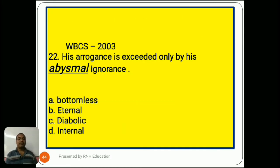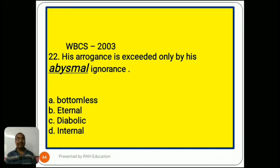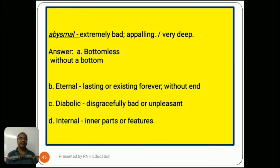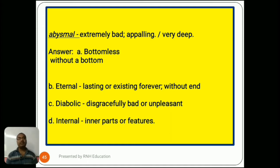Question number 22, from BCS 2003: 'His arrogance is exceeded only by his abysmal ignorance.' Options are A) bottomless, B) eternal, C) diabolic, D) infernal. Abysmal means extremely bad, or very deep. So the answer is A) bottomless — without a bottom. Option B, eternal, means lasting or existing forever without end. Option C, diabolic, means disgracefully bad or unpleasant. Option D, infernal, means relating to the inner parts or features.